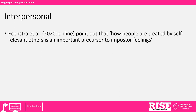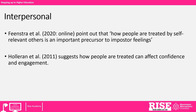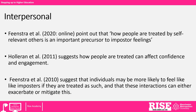Feenstra et al. point out that how people are treated by self-relevant others is an important precursor to imposter feelings — meaning that the interactions you have with others shape how you judge your own value or worth. Holleran suggests that how people are treated in a workplace, for example, can affect their confidence and engagement. Feenstra et al. suggest that individuals may be more likely to feel like imposters if they are treated as such, and that these interactions can either exacerbate those feelings or mitigate them, which is why Feenstra argue this is a really important area to explore.